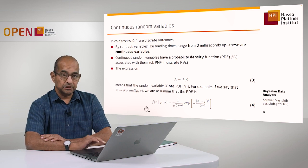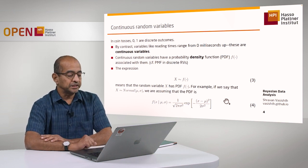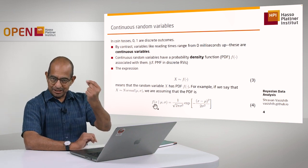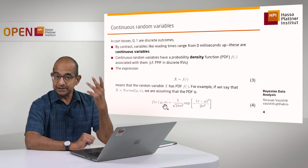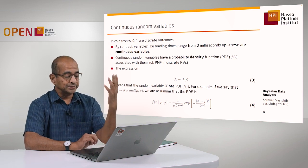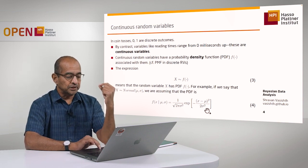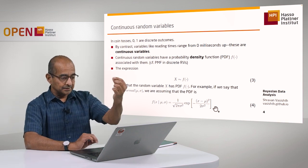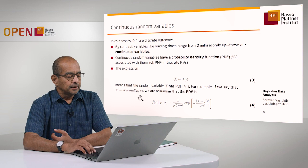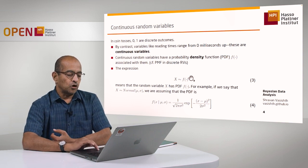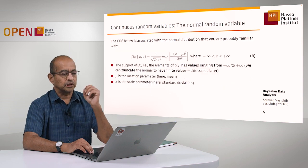This is the actual probability density function of the normal distribution. What does this function do? As input, it takes a particular element in the support of X — so some reading time you might have observed — and given some mu and sigma parameter values, just like we had theta earlier, now we have parameters mu and sigma. Given specific values of mu and sigma, you plug X into this function and get an actual numerical value. It's just the standard functional approach.